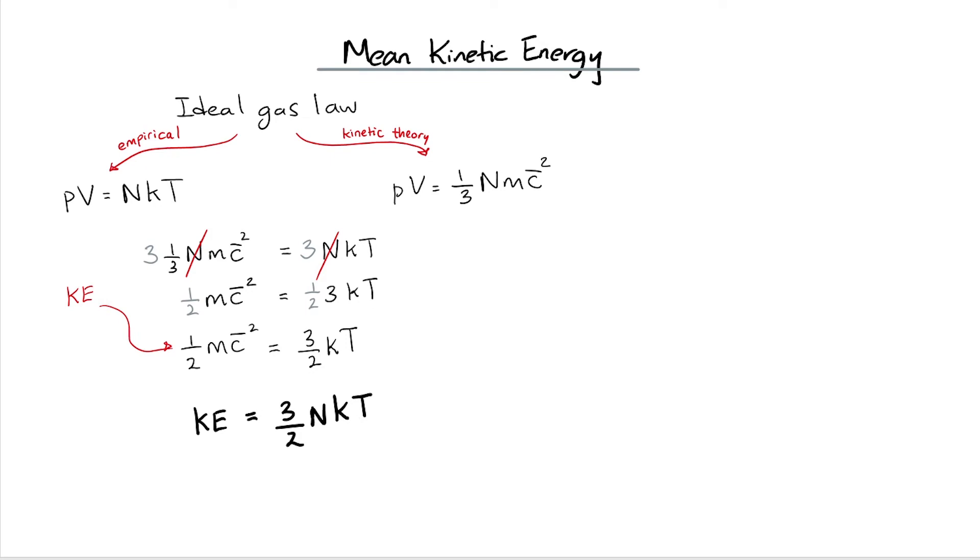The significance of this equation is that the absolute temperature of an ideal gas is proportional to the average kinetic energy per gas molecule. If the changes in pressure or volume cause a change in temperature, then the average kinetic energy of gas molecules also changes.